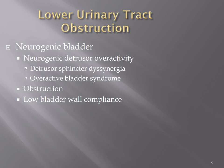Causes of neurogenic bladder include brain or spinal cord injury, neurosystem tumors, brain or spinal cord infection, dementia, Parkinson's disease, spina bifida, stroke, multiple sclerosis, alcoholism, lupus, metal poisoning, herpes zoster, and certain medications. In general, in an acute setting, neurogenic bladder is most commonly related to trauma — specifically spinal cord trauma or brain injury.